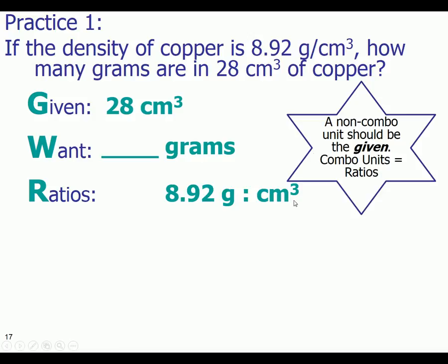So now I've created a ratio. All densities mean, this just means for every cubic centimeter of copper, there's 8.92 grams or 8.92 grams of copper in a cubic centimeter. So it's just a ratio.